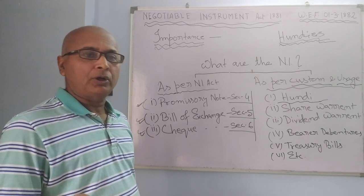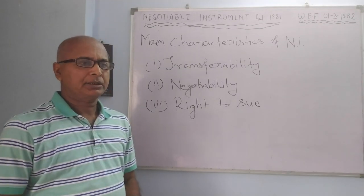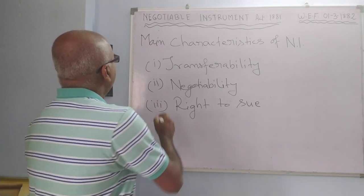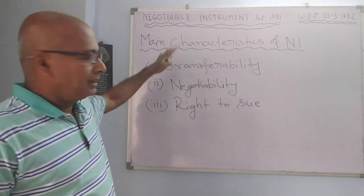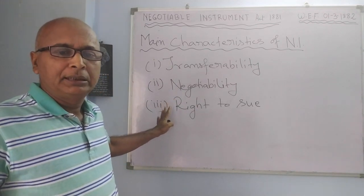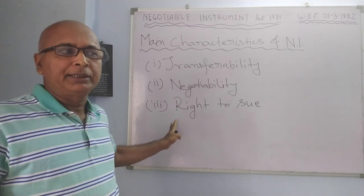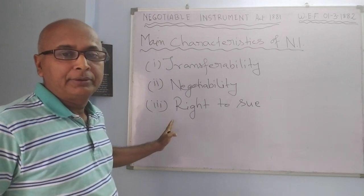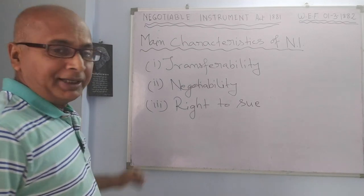Now let us come to the characteristics of negotiable instruments. There are three main characteristics. There are many characteristics — for example, a negotiable instrument is a written document, there must be a date, and negotiable instruments are unconditional — but these three are the main and basic ones. The first characteristic is transferability.